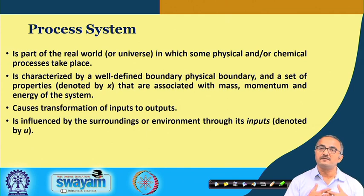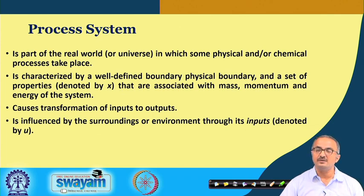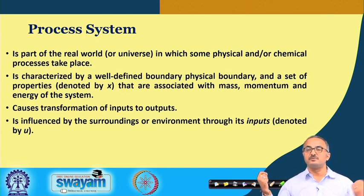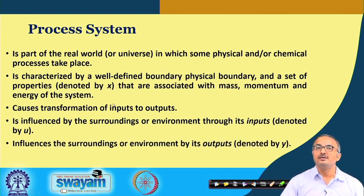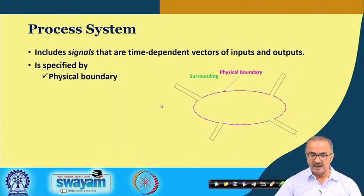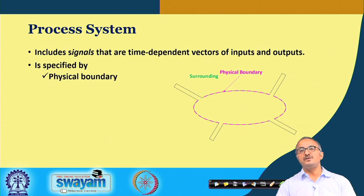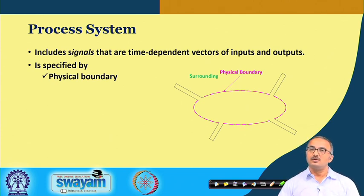The working of a system is always influenced by how the system is interacting with its surroundings. The environment or surroundings plays a very important role in deciding the output of a system. Inputs go from the outside — that is, from the surroundings — into the system, and these are generally designated by U. The system also influences the surroundings by ejecting something, which is the output of the system, generally represented by Y. These signals are either the inputs or the outputs of the system.